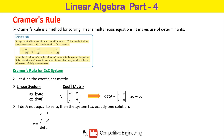Dividing by the determinant of A gives us the x value. In the same way, to find the y value, we replace the second column of A with the right-side values [e; f]. So y equals det([a e; c f]) divided by det(A).